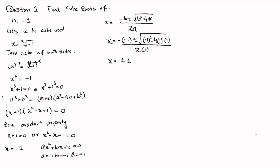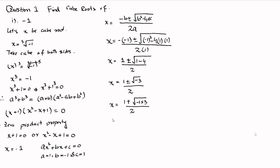So x equals 1 plus or minus the square root of 1 minus 4, divided by 2. That gives 1 plus or minus the square root of minus 3, divided by 2. Now minus 3 can be written as minus 1 times 3, so separating the square root we get the square root of minus 1 times the square root of 3. The square root of minus 1 equals iota, so we have x equals 1 plus or minus iota root 3, all divided by 2.